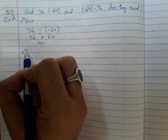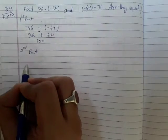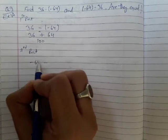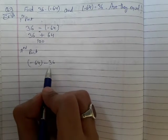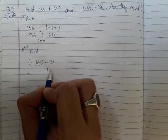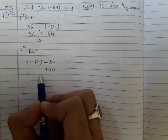part, it is (-64) - 36. So (-64) - 36. Here you can say both the integers are negative, so we will add their values. So 64 and 36 is hundred, and common sign is negative, so it